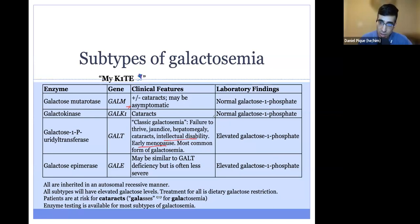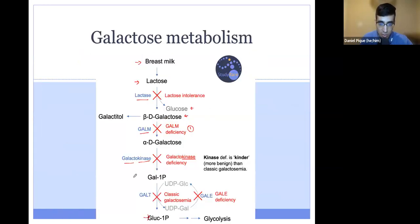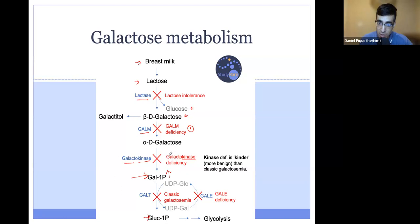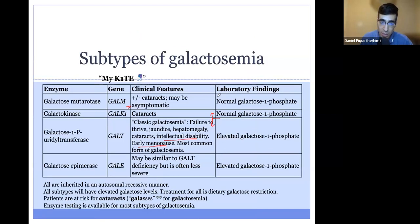From a laboratory perspective, one important distinction is the presence or absence of elevated galactose-1-phosphate. Going back to the pathway, galactose-1-phosphate is formed at a specific step. Any enzyme downstream of galactose-1-phosphate — that's GALT and GAL — will show elevated GAL-1P levels. Galactokinase and GAL-M deficiency, being upstream of galactose-1-phosphate, will not have elevated GAL-1P. So GAL-M and GAL-K have normal GAL-1P, while GALT and GAL have elevated GAL-1P.